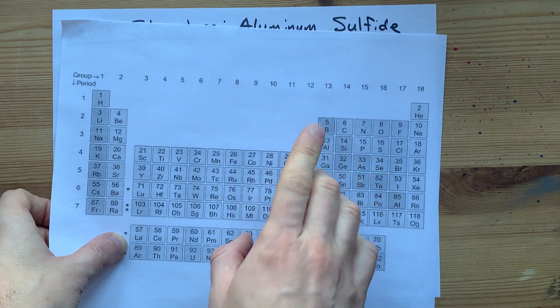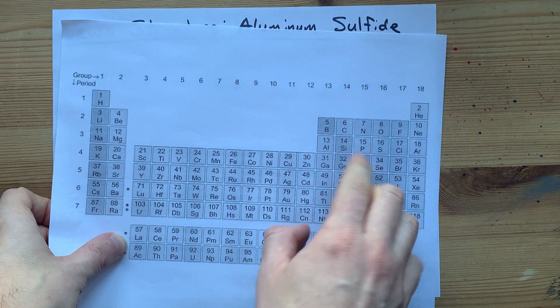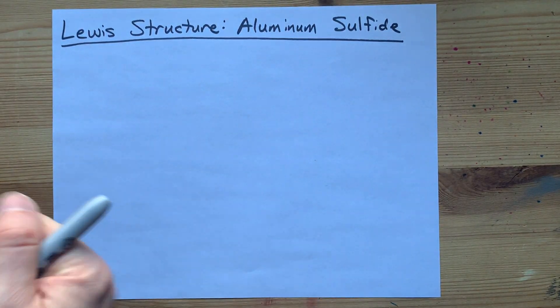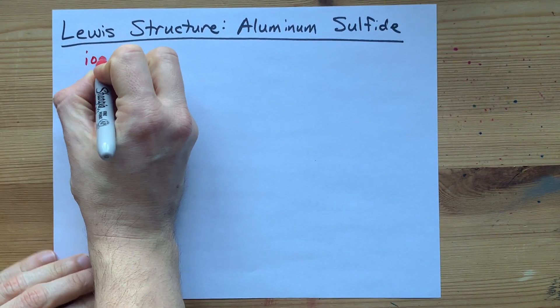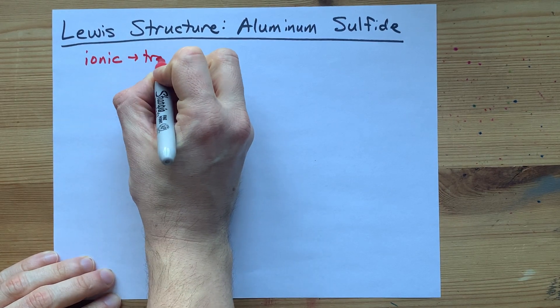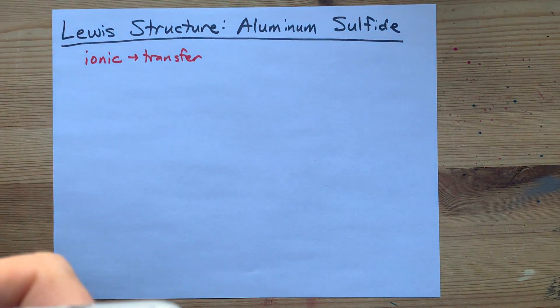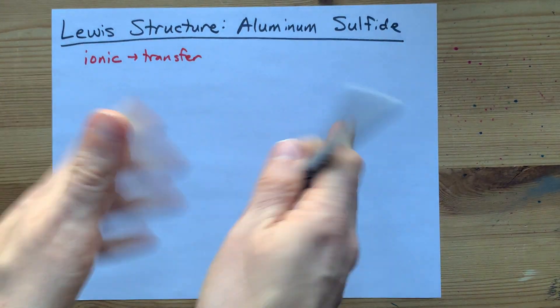Aluminum is on the left and so is a metal. Sulfur is on the right and so is a non-metal. That's important because when you combine the two you get an ionic compound and those are formed by the transfer of electrons from metal to non-metal.